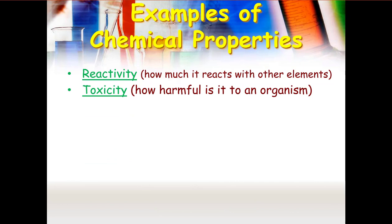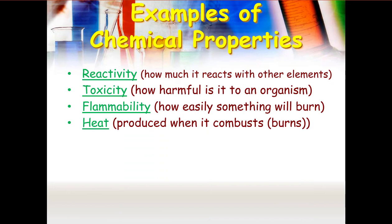Another example of a chemical property. Toxicity. How toxic is it to organisms, living things? How flammable is it? How easily will it burn? How much heat will it produce? Flammability and heat are different things.